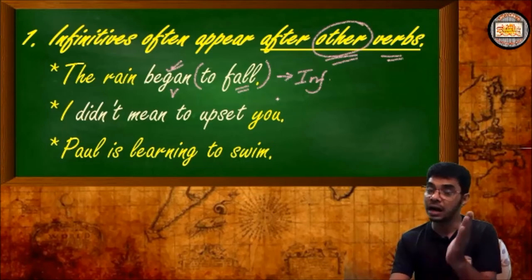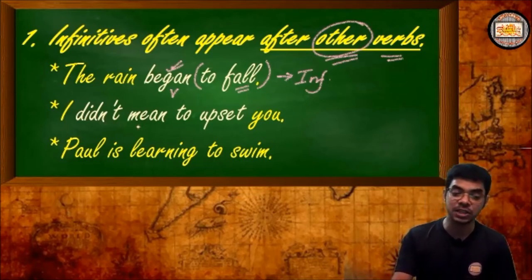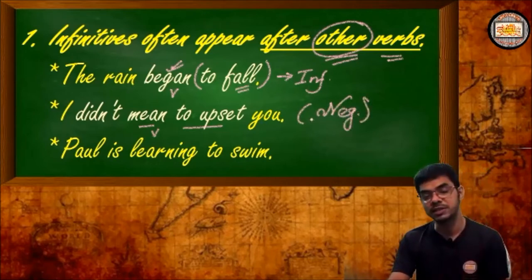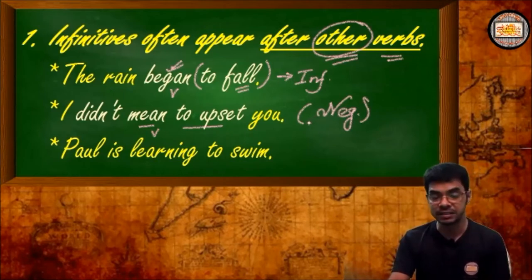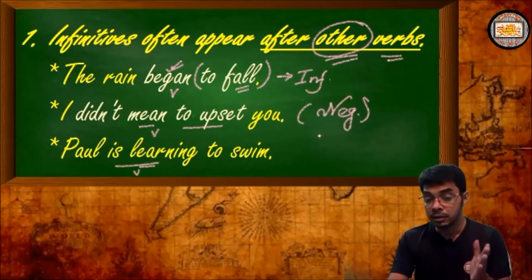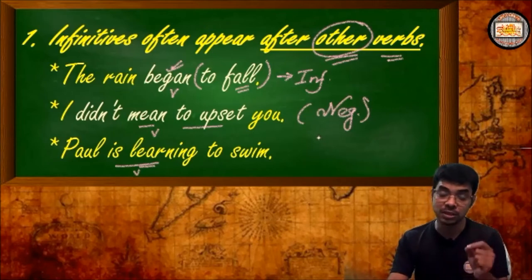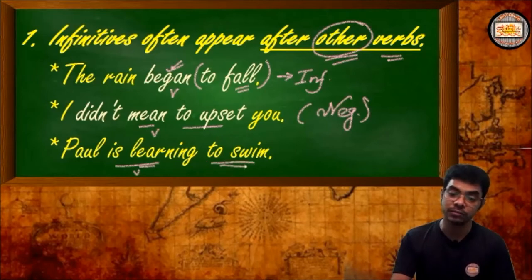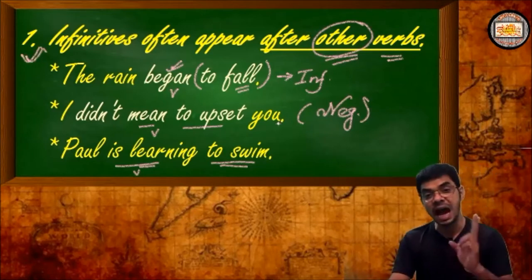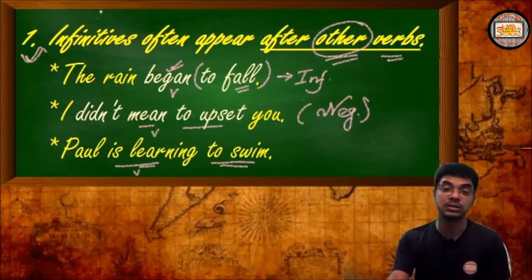After a verb, an infinitive may occur. Like this sentence: 'I didn't mean to upset you.' So 'mean' is the verb, and here we have also shown a negative sentence. Another example: 'Paul is learning to swim.' So 'is learning' is a verb in present progressive tense, and after this verb we get the infinitive 'to swim.' This is our first rule — an infinitive can be placed after certain verbs.